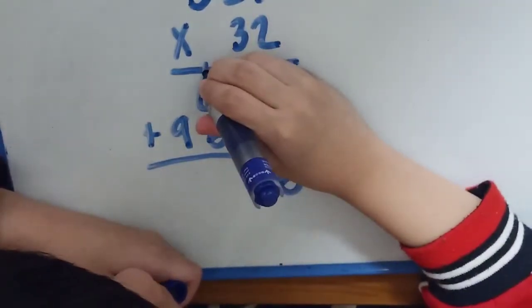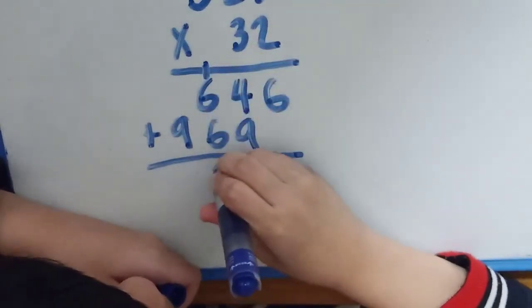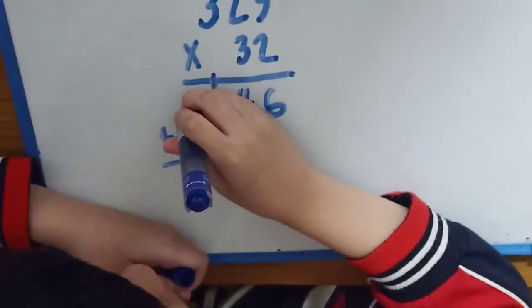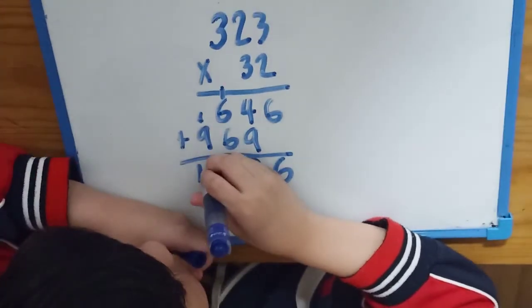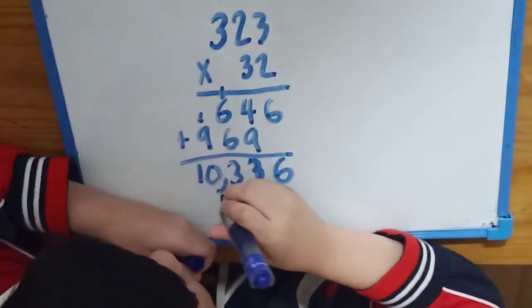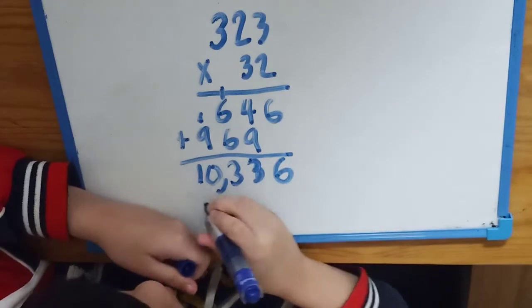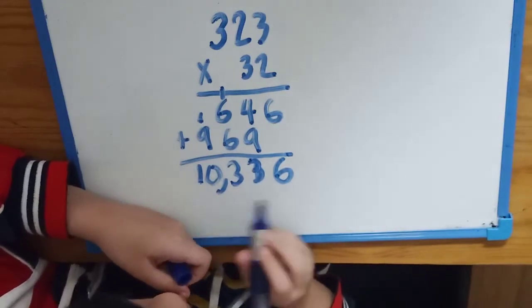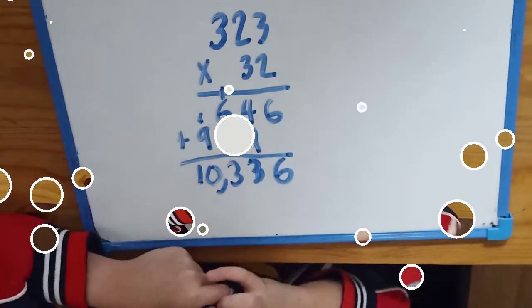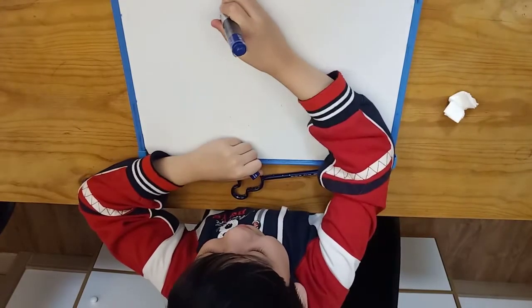Carry 1. 6 plus 6 plus 1 is 13. Carry 1. 9 plus 1 is 10. Your answer is 10,336. Let's try another one.